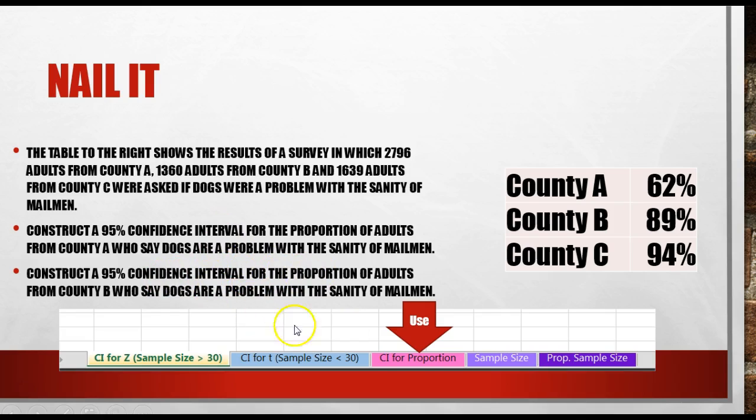Construct a 95% confidence interval. So for A and for B, we're going to be using down there in the middle confidence interval for a proportion. We've got 2,796 from County A, and I know that there's 62%. We're going to nail this. Then we're going to do a 95% confidence interval for County B, where I've got 1,360 and 89% saying that the dogs have a problem with the sanity of the mailman.